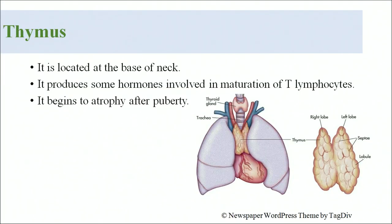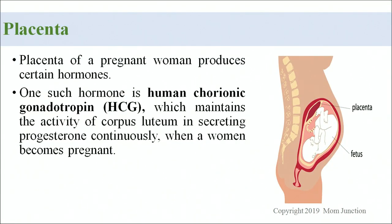The thymus is located at the base of the neck and produces hormones involved in the maturation of T lymphocytes. It begins to atrophy after puberty. The placenta of pregnant women produces hormones, the most important being human chorionic gonadotropin (HCG), which maintains the activity of the corpus luteum in continuously secreting progesterone during pregnancy.